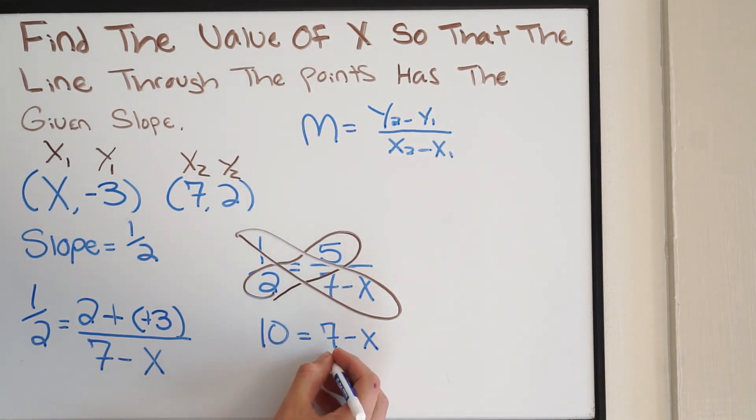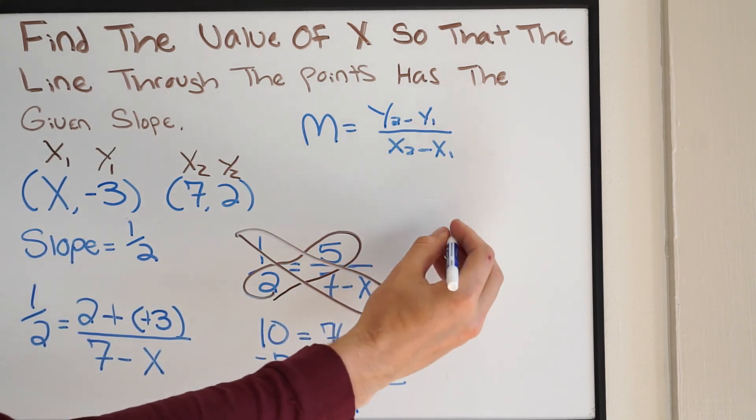Let's go ahead and subtract 7 now on both sides. This will cancel. So 3 equal to negative x. So let's go ahead and write it again right here. So 3 equal to negative x.